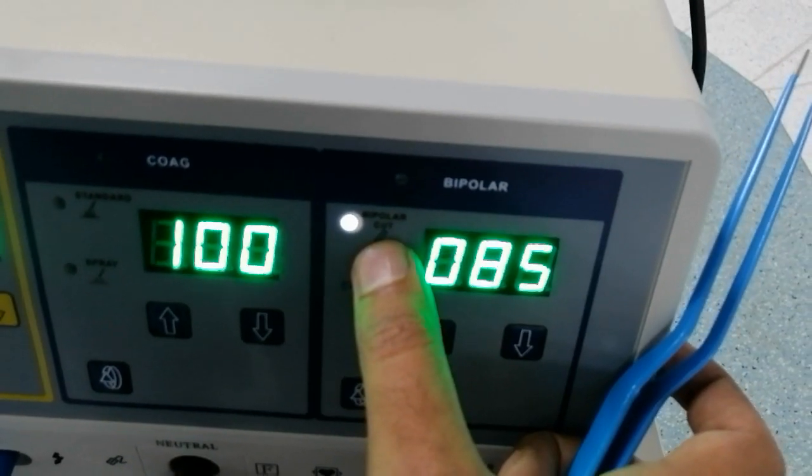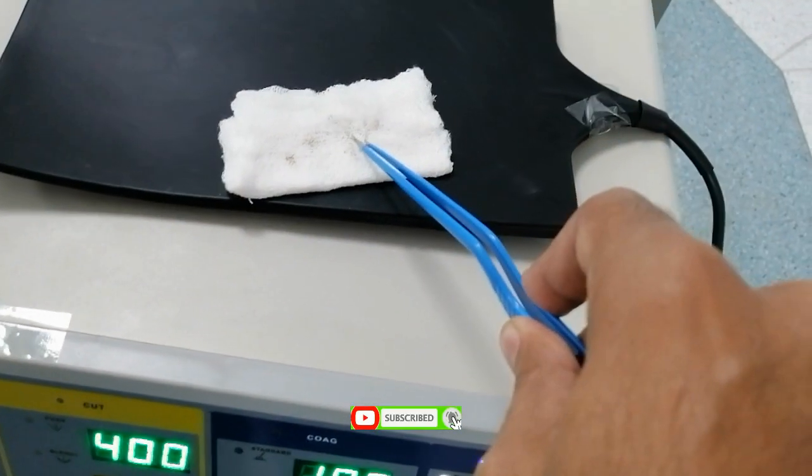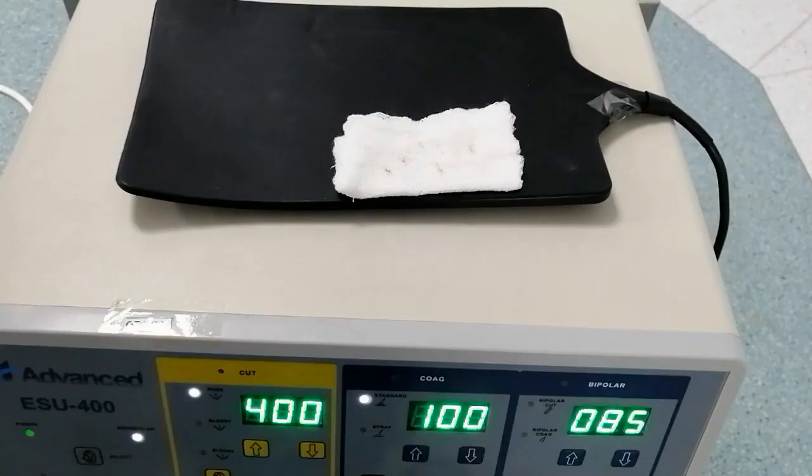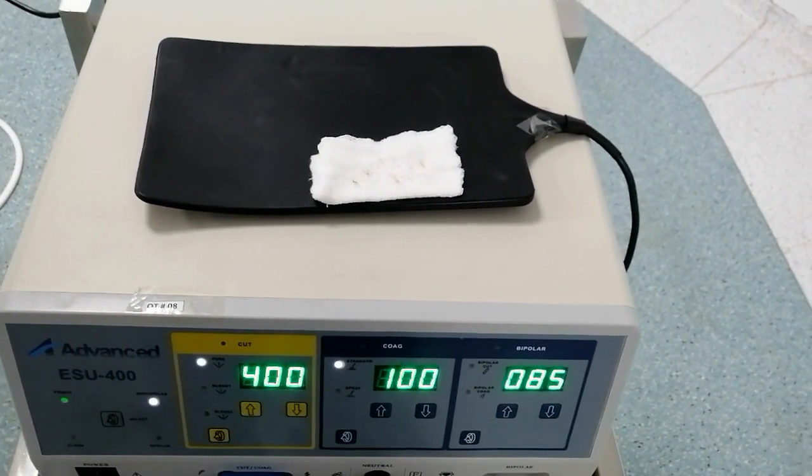Now I select the bipolar cutting and check on the gauze piece. So this is the operating procedure of this electrosurgical unit.